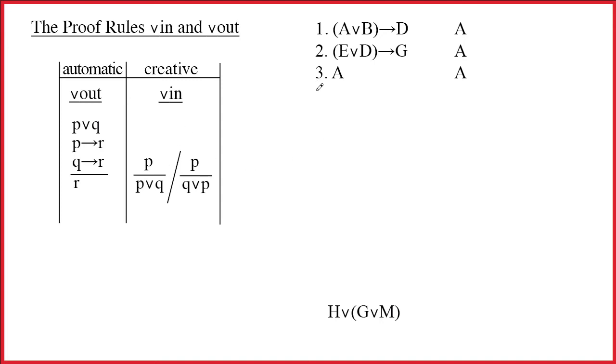On line 4, I am actually now going to write A wedge B. Now where is this A wedge B coming from? It's not coming from line 1.